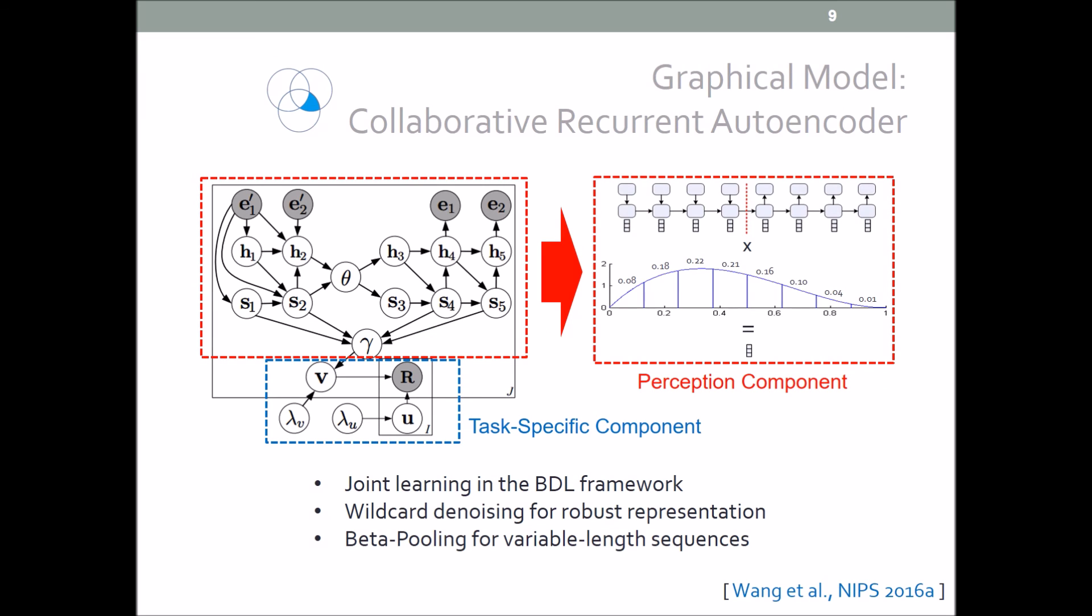Here's the corresponding graphical model. The red part is a recurrent autoencoder with wildcard denoising and beta pooling as the perception component. The blue part is a task-specific component to model the ratings. We call this model collaborative recurrent autoencoders.